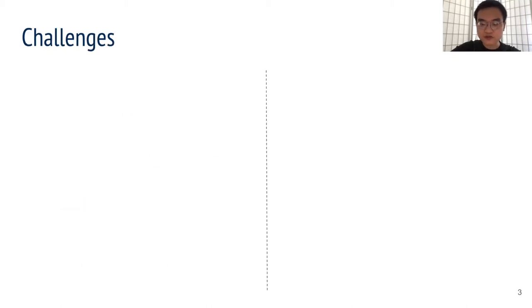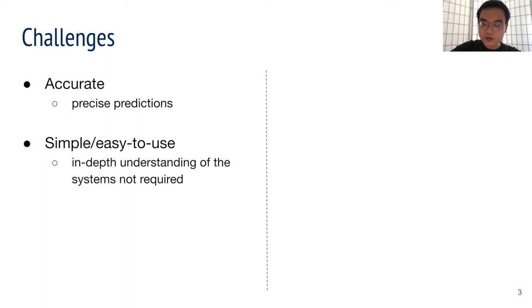So what are the challenges for performance prediction? First, the prediction needs to be accurate in order to be useful. It should be simple and easy to use that one can apply it without detailed knowledge of the system internals. Finally, we want predictors that are general, meaning the approach applies to a wide range of applications and use cases.